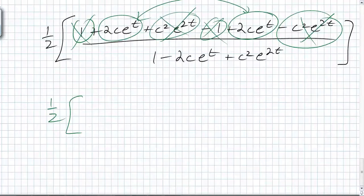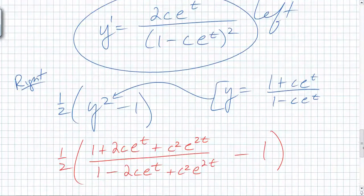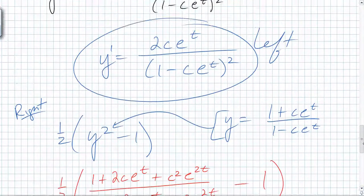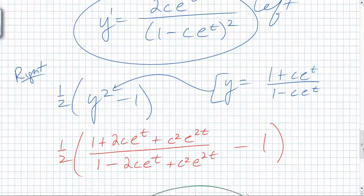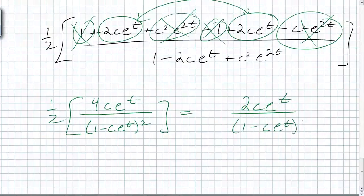One half times four c e to the t over, and how can we rewrite the denominator? What was it? One minus c e to the t squared. And what is that going to equal? Two c e to the t over one minus c e to the t.